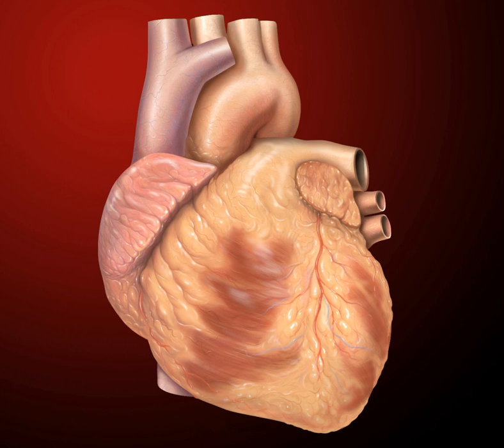Within seconds after birth, a flap of tissue known as the septum primum, which previously acted as a valve, closes the foramen ovale and establishes the typical cardiac circulation pattern. A depression in the surface of the right atrium remains where the foramen ovale was, called the fossa ovalis.